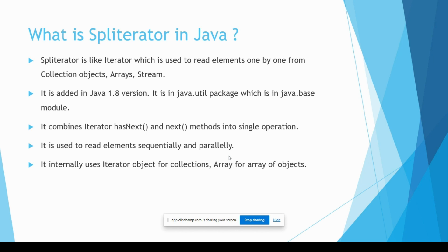When we use Iterator or ListIterator, we use two methods: hasNext to check whether the element is available or not, and if it is available, we use the next method to read elements from the collection object. When it comes to Spliterator, we don't need two methods — we can use a single method. Using Spliterator we can read elements sequentially, one after another, and also parallelly. Spliterator internally uses the Iterator interface for collection objects.